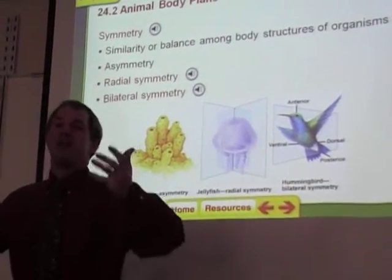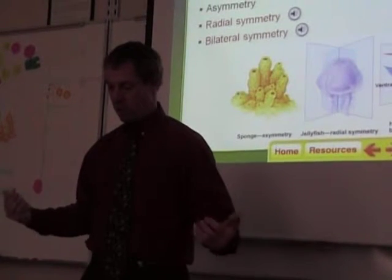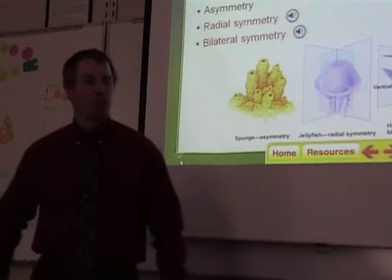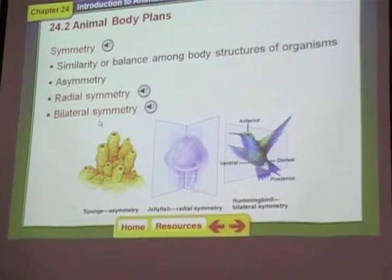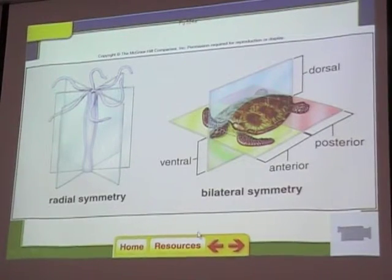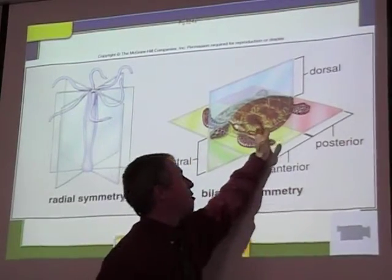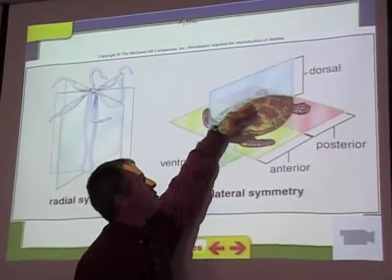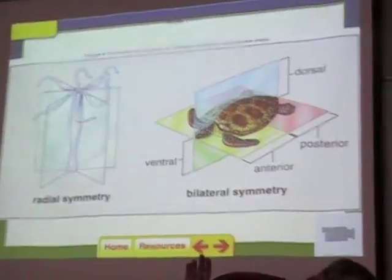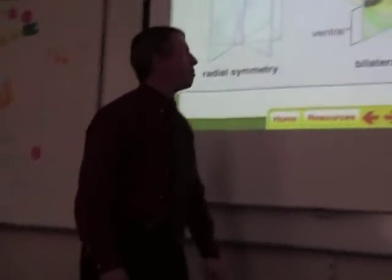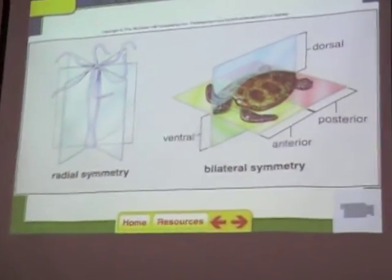Bilateral symmetry is what the higher organisms have — what we have, what birds have, fish. There's only one way you can cut them to get equal halves: right down the middle. We call that bilateral symmetry, and organisms with bilateral symmetry have a left half and a right half. You'll have to know these words: anterior means toward the front, posterior means towards the rear, dorsal means towards the back — you've heard of a dorsal fin on a shark — and ventral means towards the front, towards the stomach.